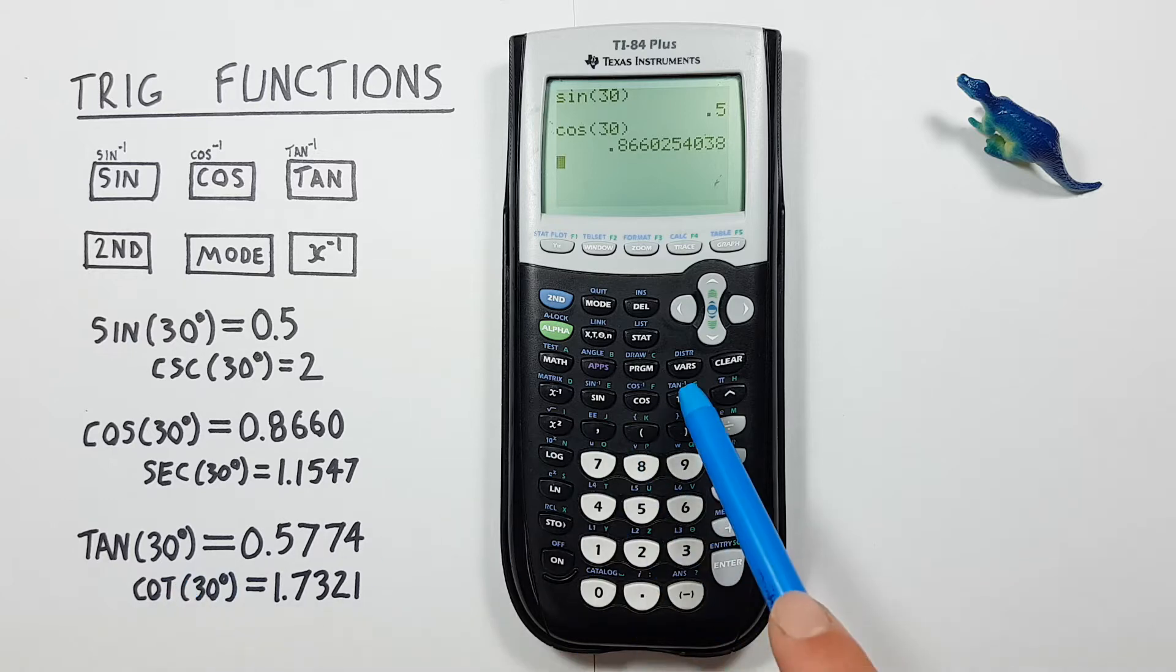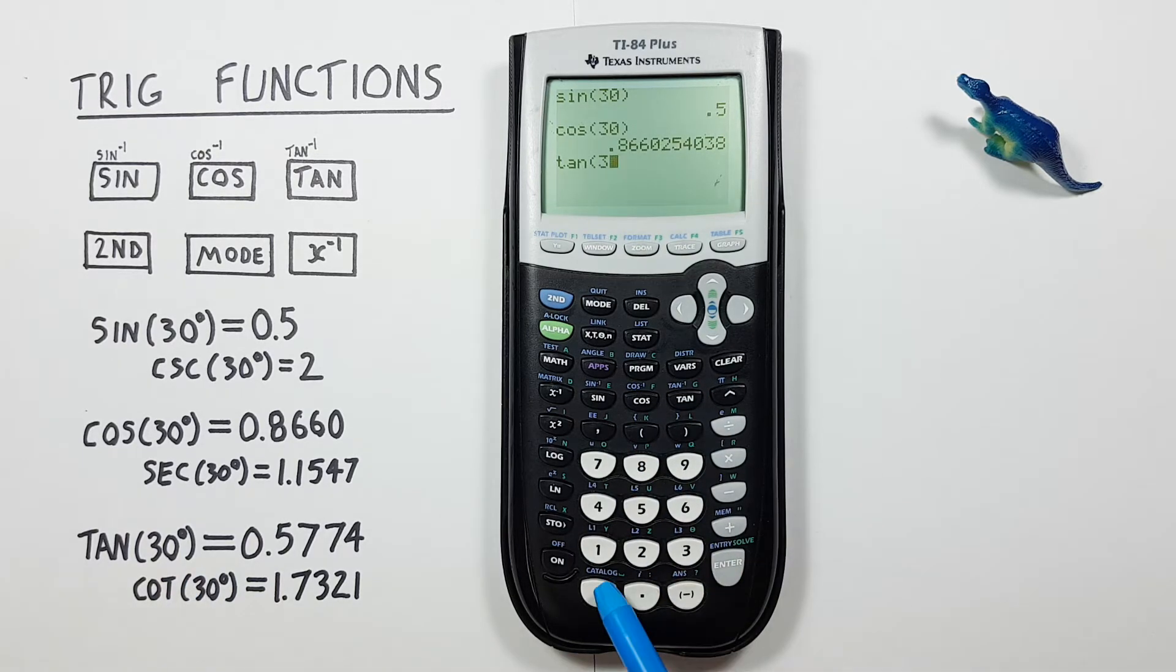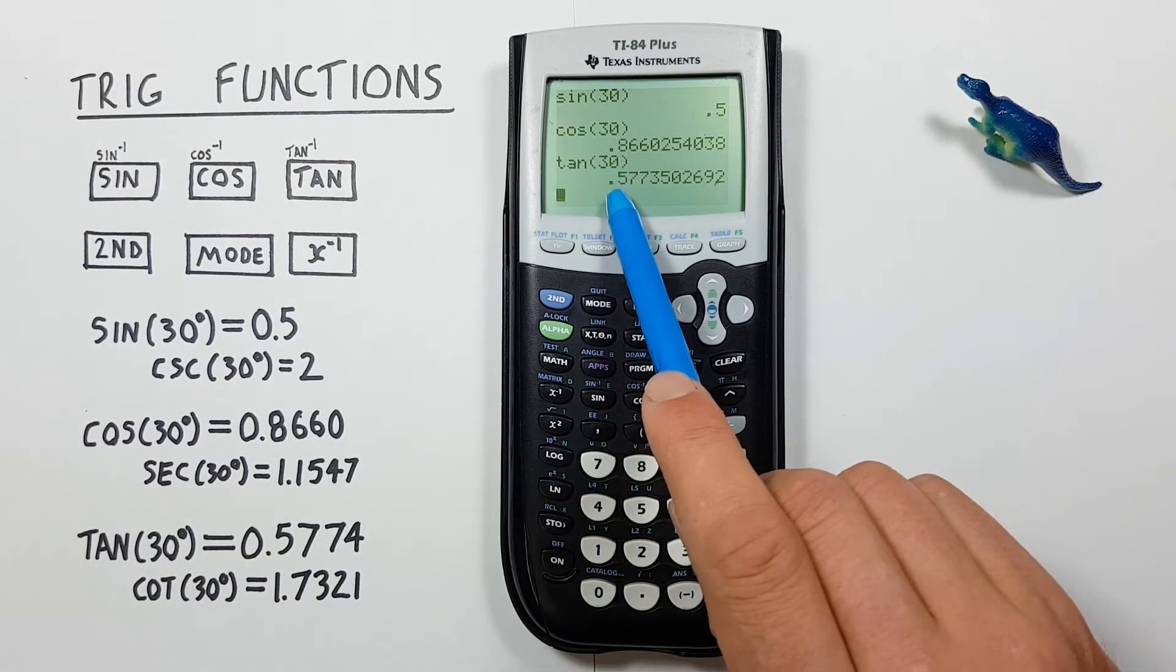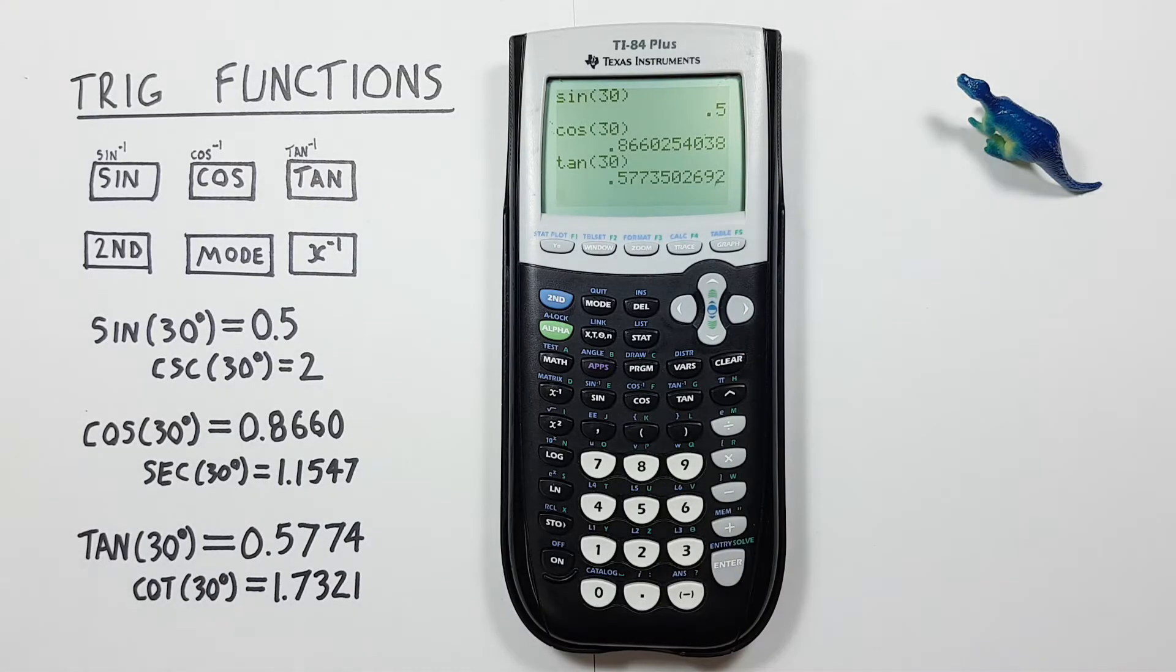And tan of 30. Tan, enter the 30, close our bracket, and press enter. There we go. This gives us 0.57735, etc., which we could round to 0.5774 if we're only going to four decimal places there. All right, easy enough.